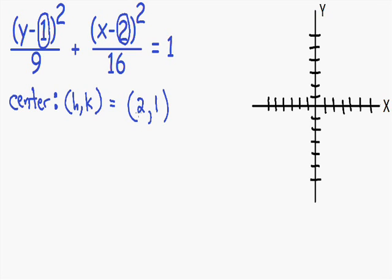So we have our center of the ellipse. The center is the coordinate (2, 1). I'm going to plot that on our graph — going over to the right two units and up one unit. Here we have the center of our ellipse, which is the point (2, 1).